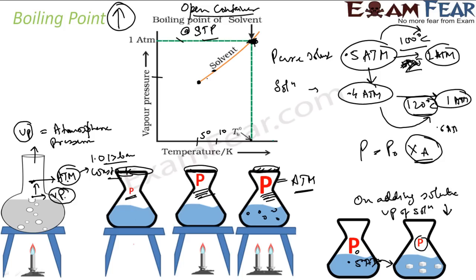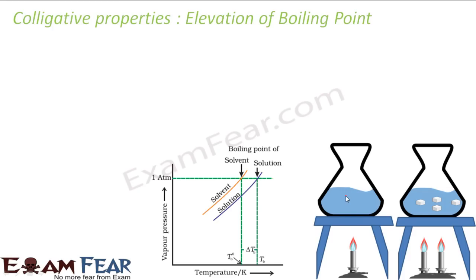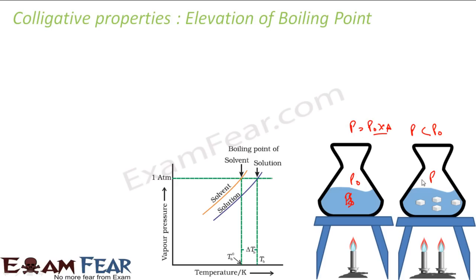Hope you understand the concept. The boiling point is the temperature at which the vapor pressure of the liquid becomes equal to atmospheric pressure. With all three facts combined, we can conclude that the boiling point of a solution will increase the moment you add a solute. So if P₀ is the pressure of the pure solvent and P is after adding solute, P is always less than P₀ because of Raoult's law — P = P₀ × mole fraction — so the vapor pressure decreases and thus more temperature is needed to boil.